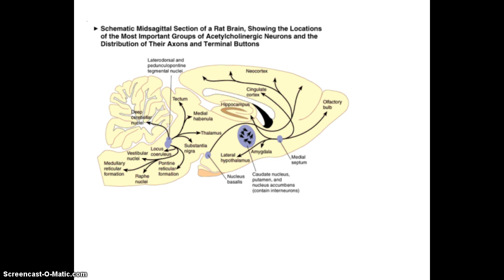This diagram from your textbook looks at a rat's brain — a mid-sagittal section showing the different projections for acetylcholine throughout the brain. As you can see, it's located in a number of locations. We see projections going to the lateral hypothalamus, the amygdala, and the neocortex. Going back into the brainstem, we see it projecting to the locus coeruleus, the substantia nigra, and the hindbrain. So acetylcholine is found throughout the brain.